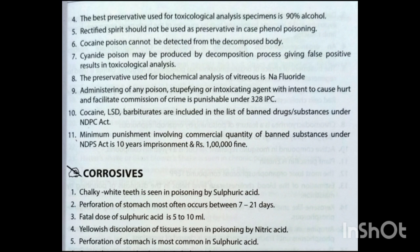Corrosion and chalky white teeth are seen in poisoning by sulfuric acid. Perforation of the stomach most often occurs between 7 to 21 days. Fatal dose of sulfuric acid is 5 to 10 ml. Yellowish discoloration of tissues is seen in poisoning by nitric acid. Perforation of the stomach is most common in sulfuric acid poisoning.